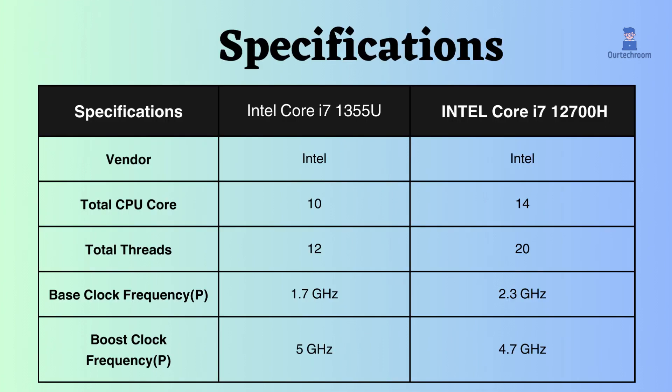The Intel Core i7-1355U has 10 cores and 12 threads, while the Intel Core i7-12700H has 14 cores and 20 threads. With more cores and threads, the Intel Core i7-12700H seems good in multitasking, especially in tasks like rendering and video editing.